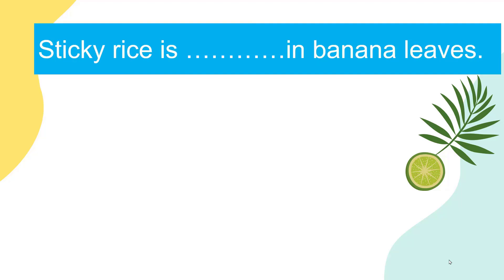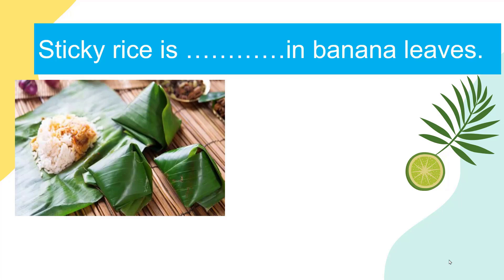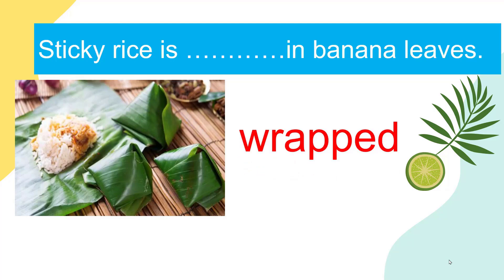You read the sentence and find the word to fill in the blank. Sticky rice is ___ in banana leaves. Five seconds for you. Go. Do you have your answer yet? Yes. Your answer is... It's B. Wrapped. Let's check it. Amazing.